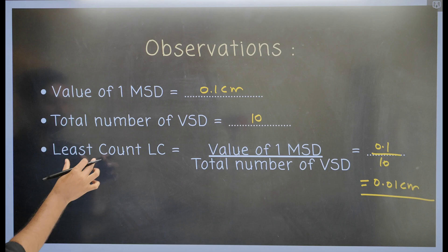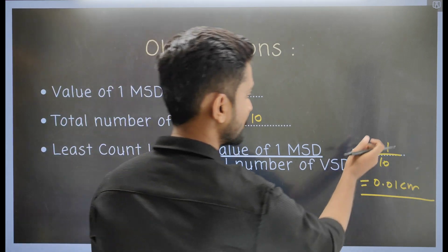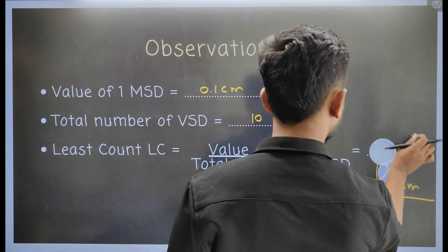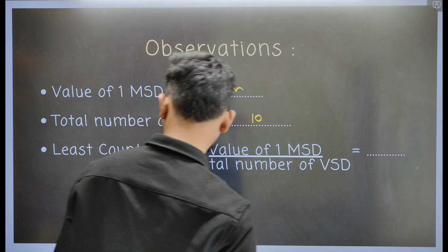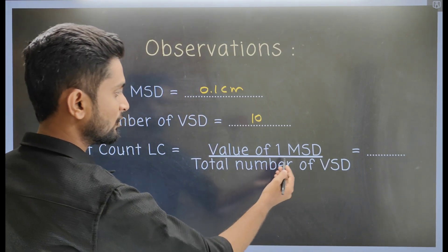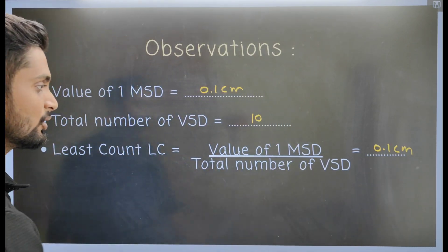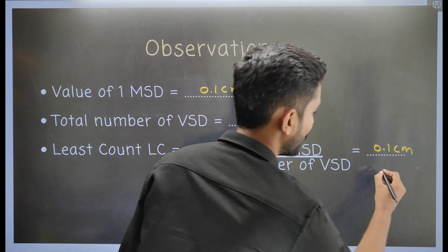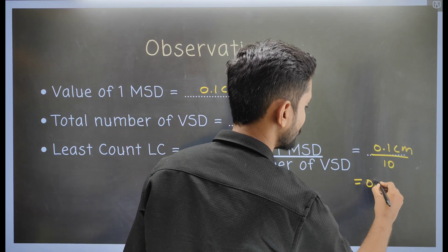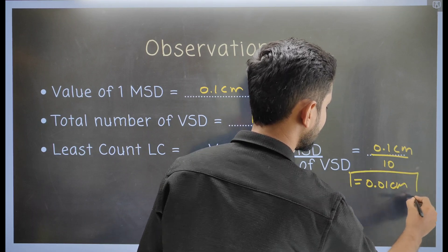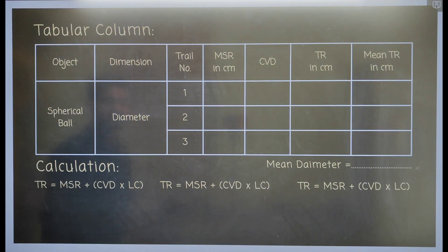The third observation is the least count. Using the formula LC = value of 1 MSD ÷ total number of VSD: value of 1 MSD is 0.1 centimeter, and total number of VSD is 10. So LC = 0.1 cm ÷ 10 = 0.01 centimeter. This is the least count of our vernier caliper.